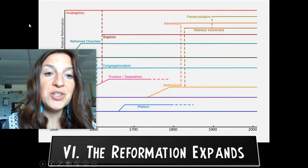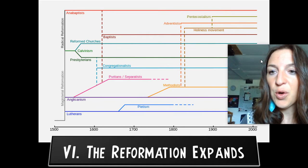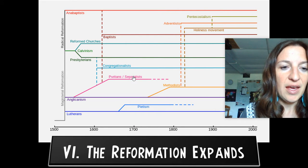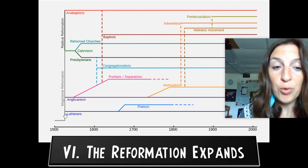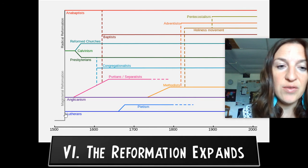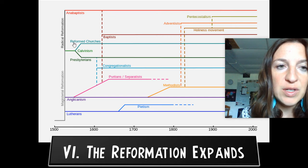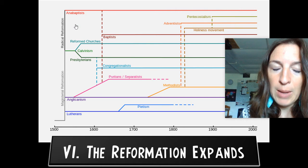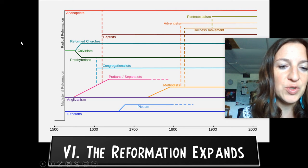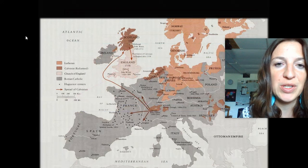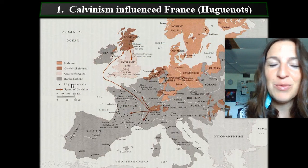Roman numeral six: the Reformation expands. We have a chart here showing when different things began. Right at the very beginning, you have Lutherans with 1517 and Martin Luther. Then you have Anglicanism, Calvinism, and Anabaptists around that beginning time, and then all these other branches that go off. You'll learn more about this next year in World Religions when you study denominations with Mrs. Winkler.